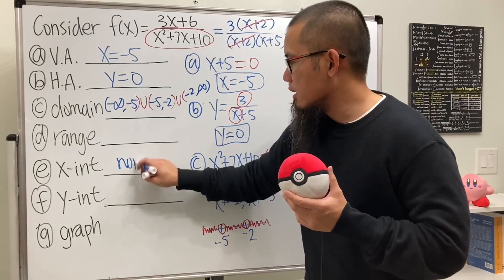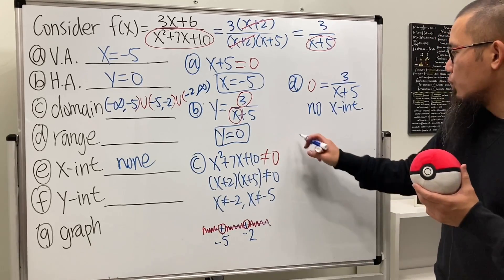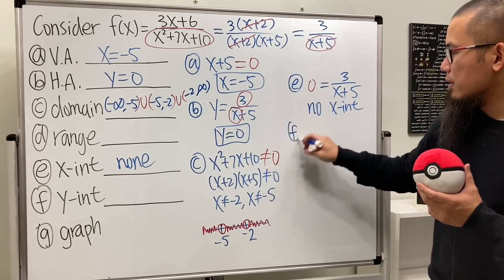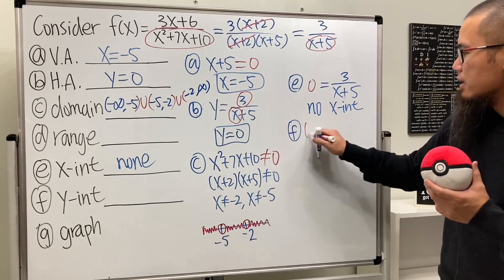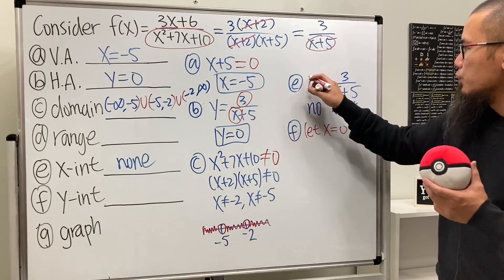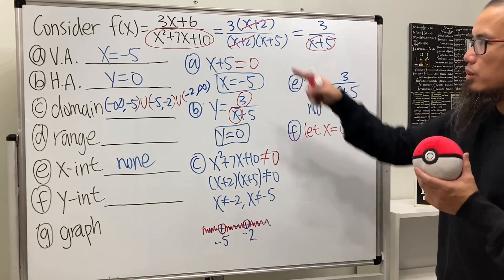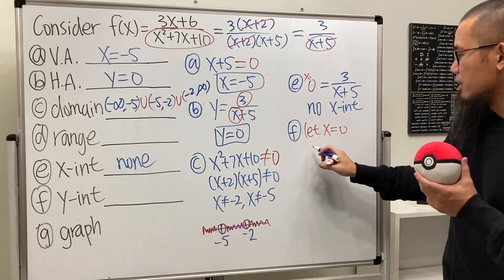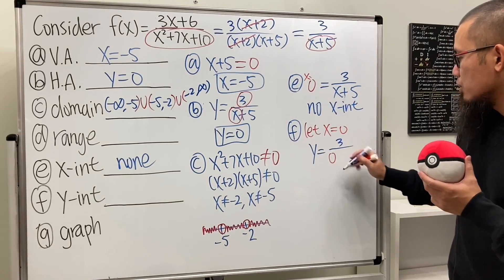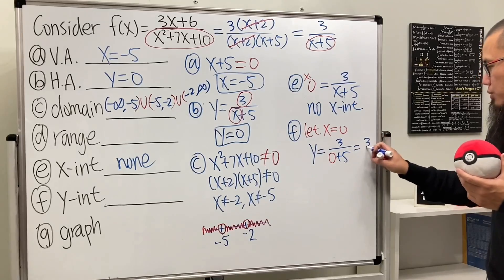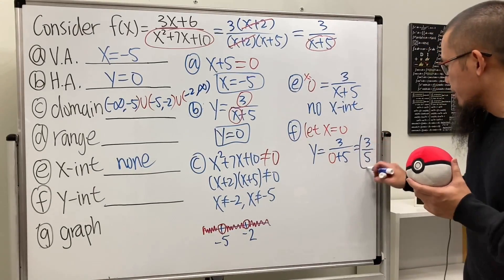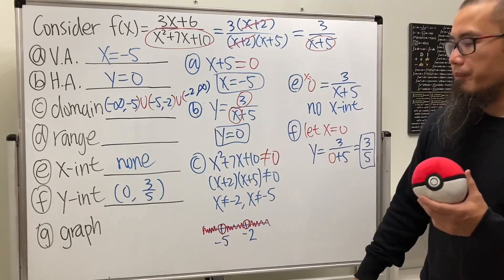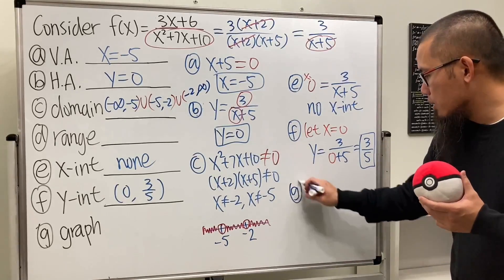For the y-intercept, let x equal zero. We can plug into the reduced form: y equals 3 over (0 + 5), which is 3 over 5. So the y-intercept is the point (0, 3/5).